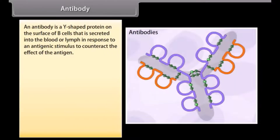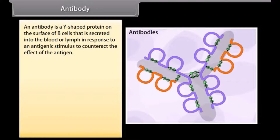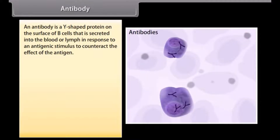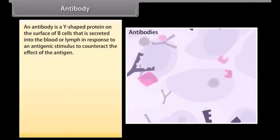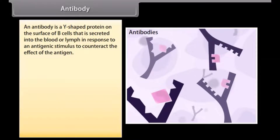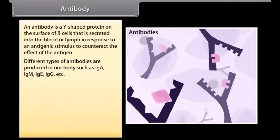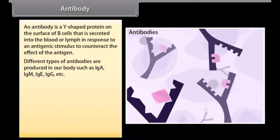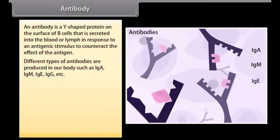An antibody is a Y-shaped protein on the surface of B cells that is secreted into the blood or lymph in response to an antigenic stimulus to counteract the effect of the antigen. Different types of antibodies are produced in our body, such as IgA, IgM, IgE, and IgG.